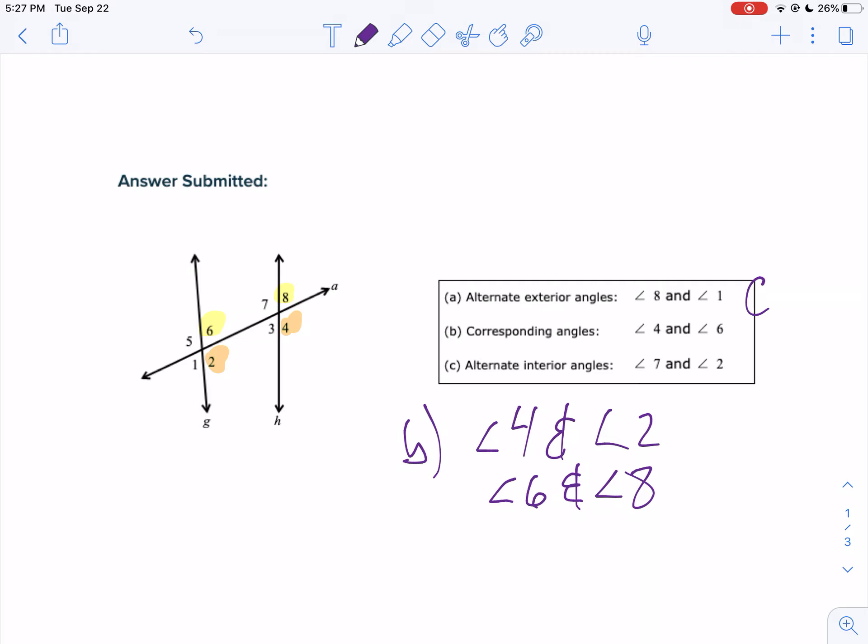Alternate interior angles, 7 and 2, you did those perfectly correct. So the only one that was incorrect was choice B.